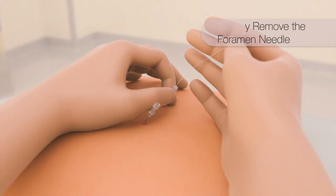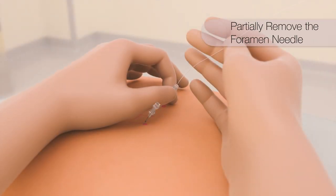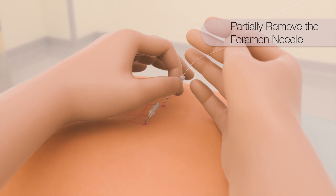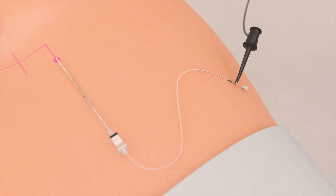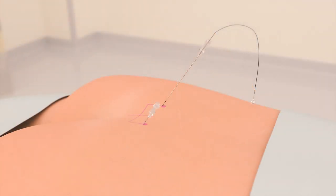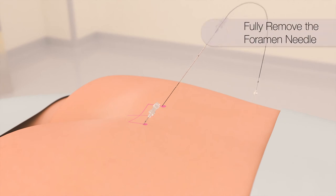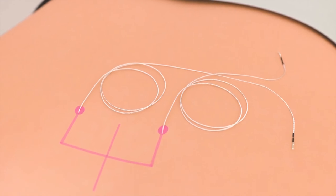The PNE lead is stabilized with one hand while removing the foramen needle from the skin with the other. Before it is fully removed, confirm responses to ensure the PNE lead has not moved. Once responses are confirmed, the foramen needle is fully removed from the PNE lead, removing the lead stylet at the same time. The PNE lead placement process is repeated on the contralateral side.